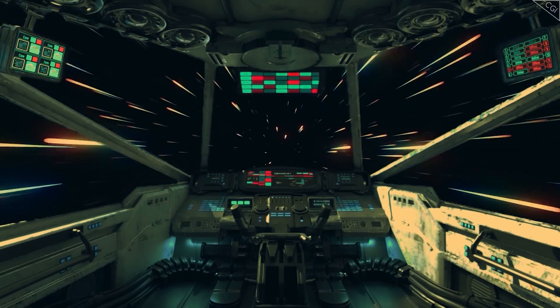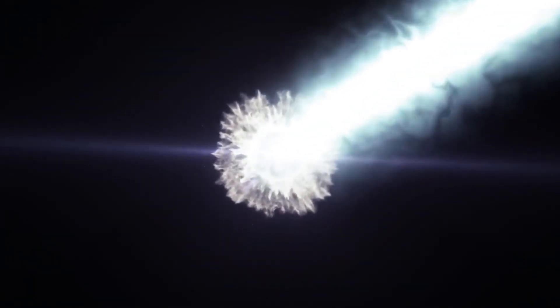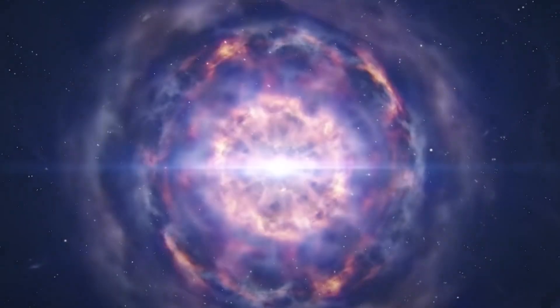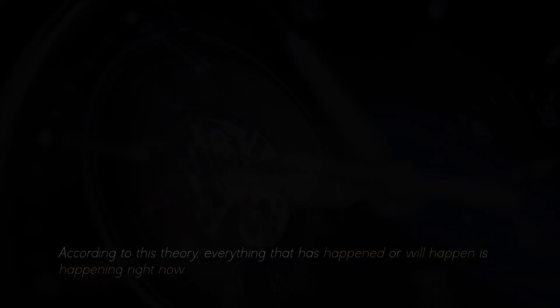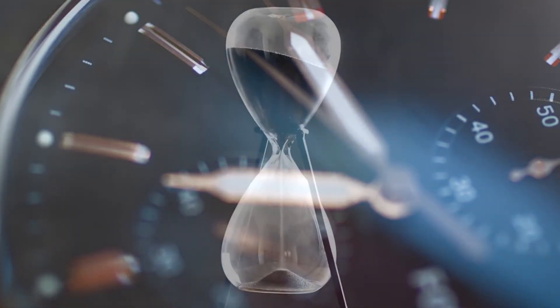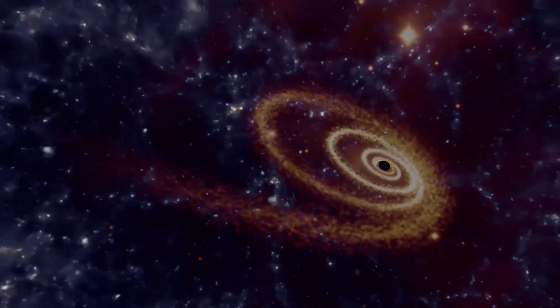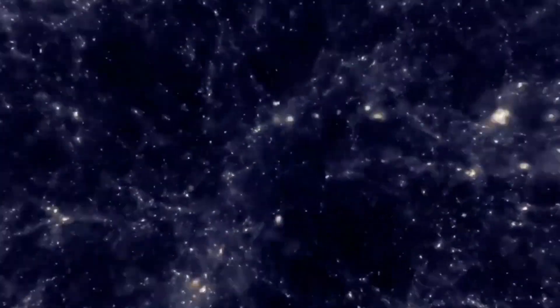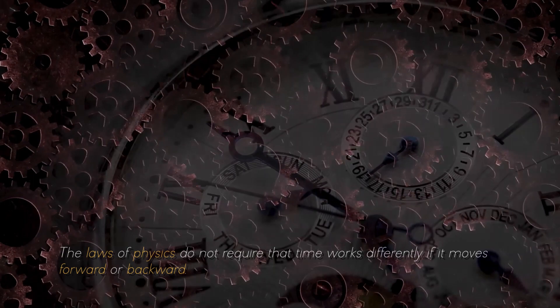Have you ever wondered whether time as we conceive it is a tangible reality or simply a human construct that we use to discern the past from the present? It is an extremely complex question, but we invite you to join us in its exploration. There is a theory that time could be an illusion generated by our human memories. According to this theory, everything that has happened or will happen is happening right now. It is a truly amazing concept, isn't it? If we delve deeper into this idea, we tend to think of time as something that flows invariably forward. However, here is the intriguing thing: the laws of physics do not require that time works differently if it moves forward or backward.